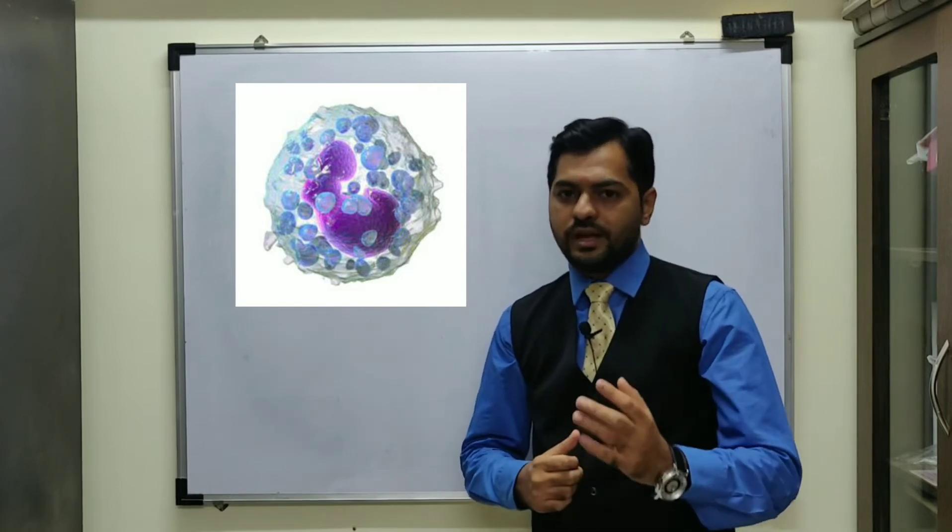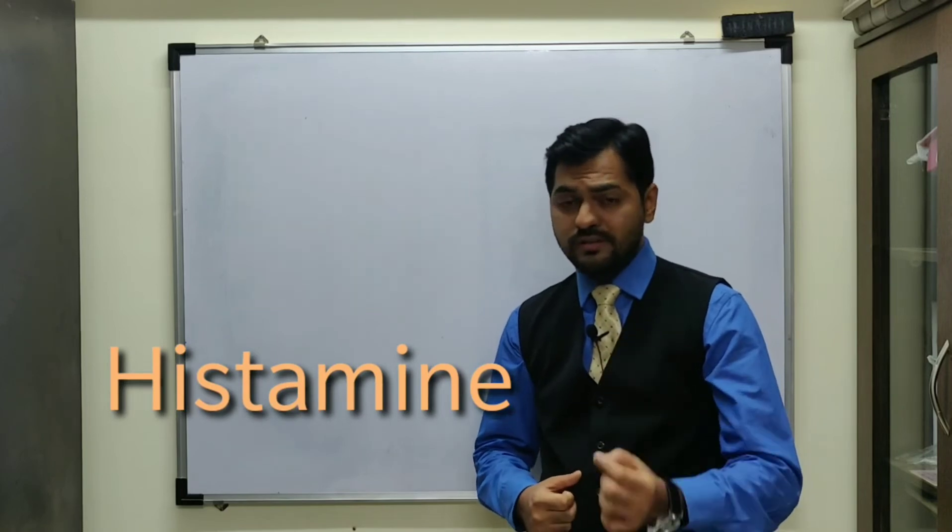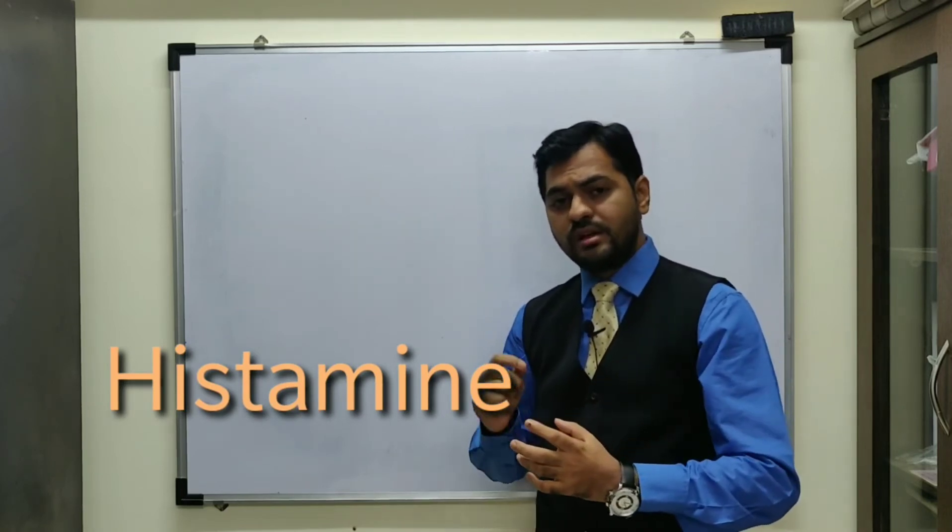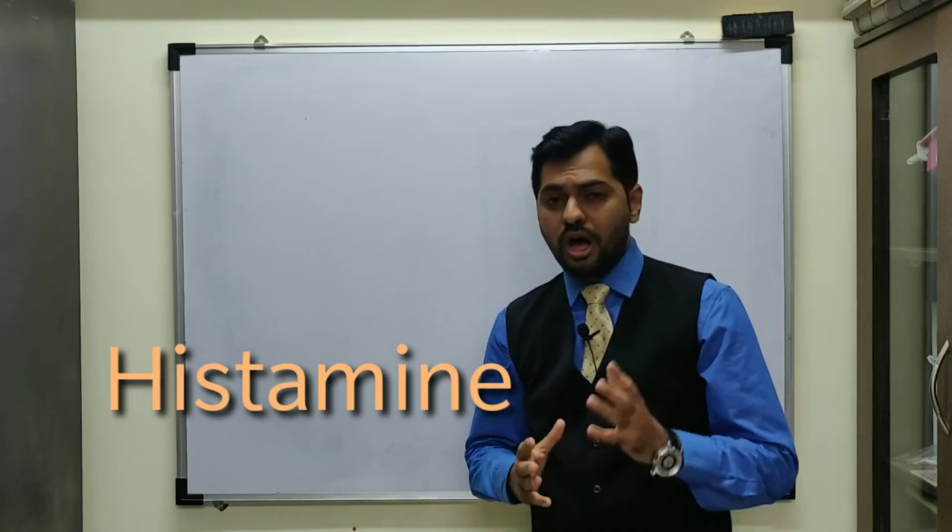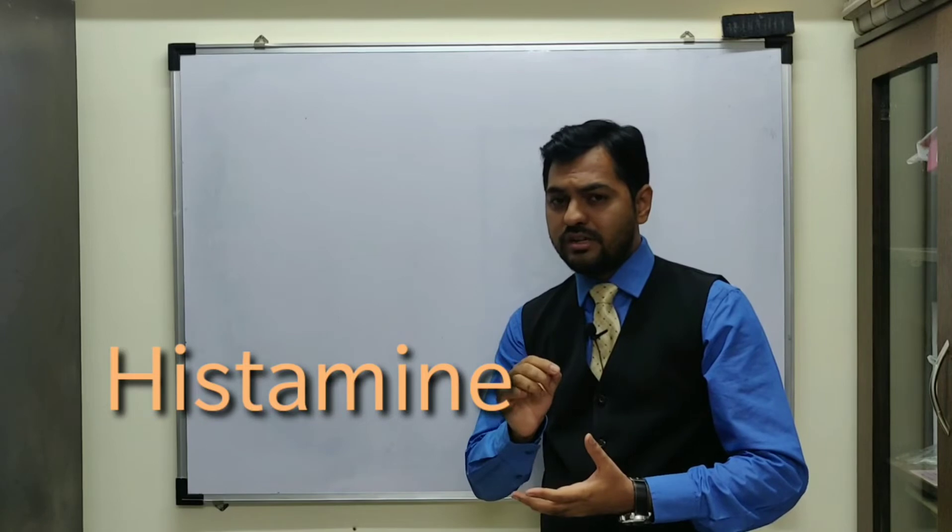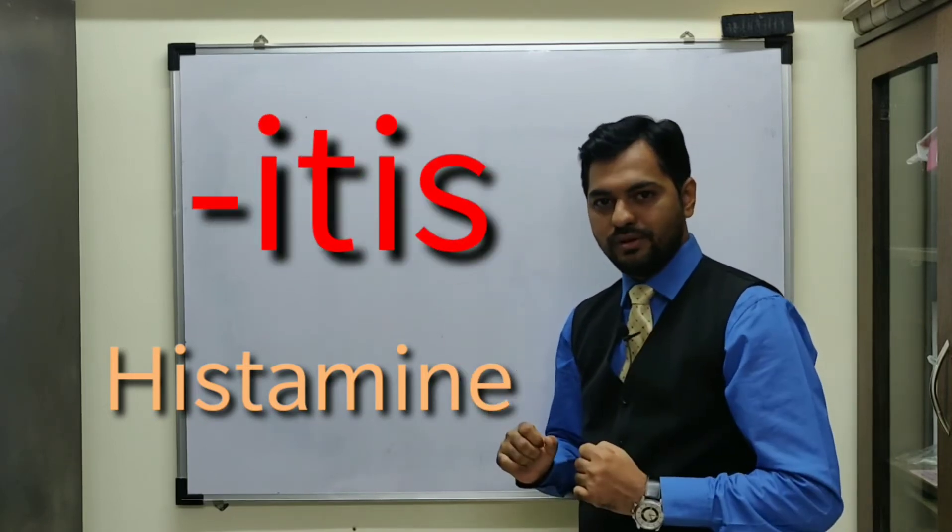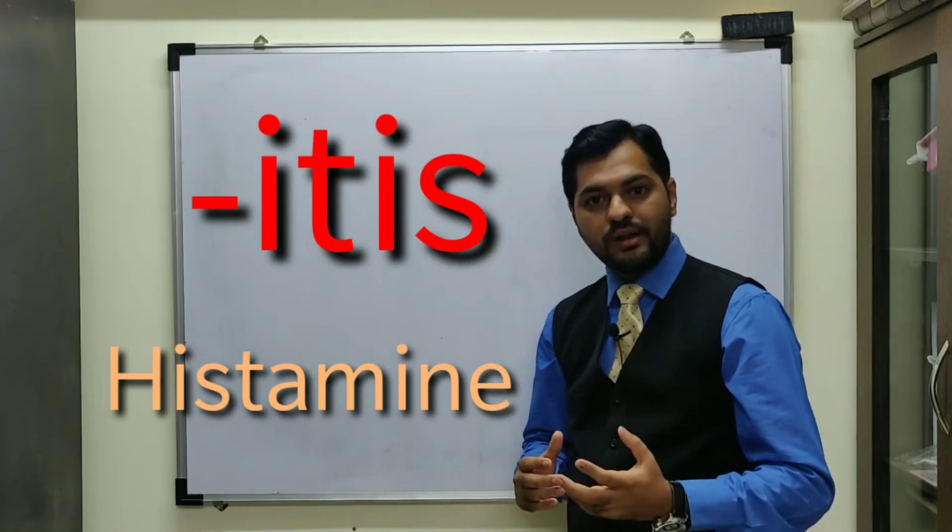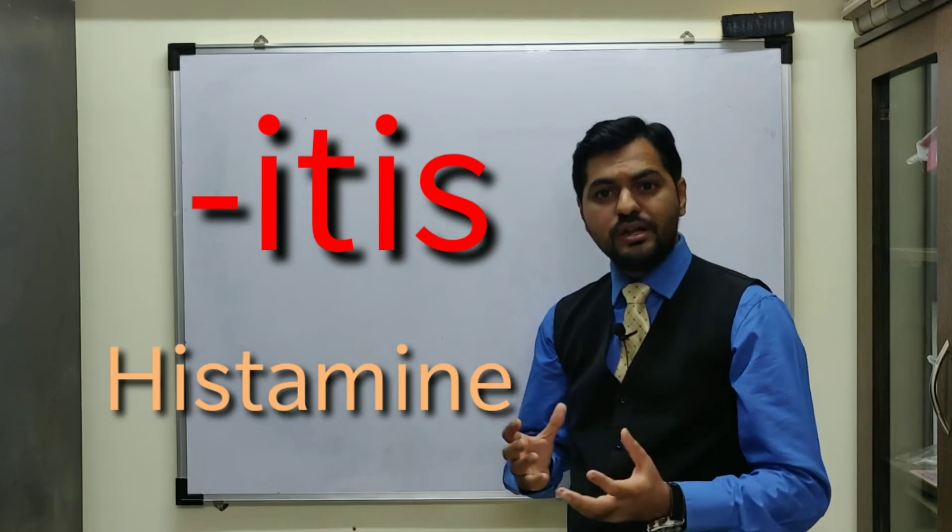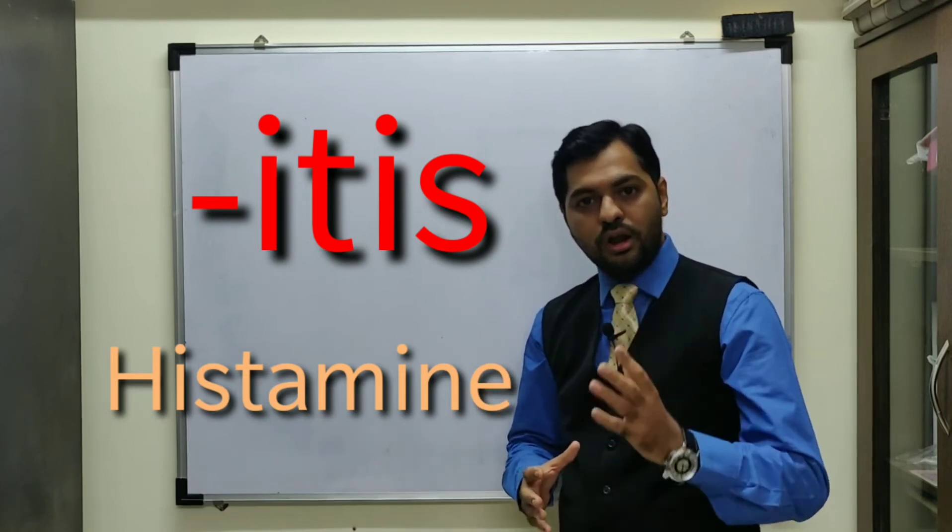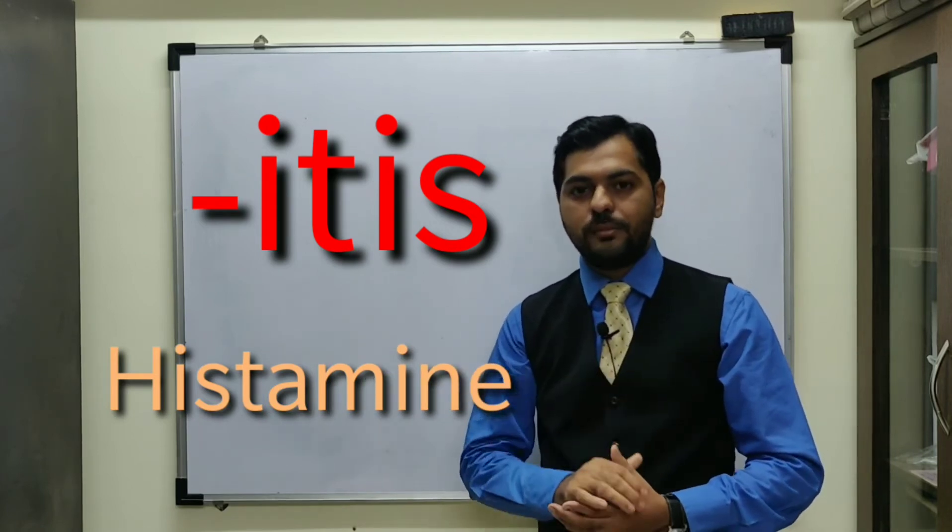The role of basophils is they mainly secrete histamine. When there is tissue damage, the release of histamine produces inflammatory response. We read about many conditions, and if the suffix 'itis' comes in those conditions, it means inflammation. For example: dermatitis, neuritis, conjunctivitis, hepatitis. All these conditions are inflammatory. The main response is due to histamine release which has been secreted by basophils.